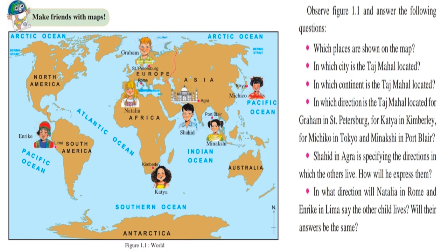The first question is which places are shown on the map? If you will observe carefully, you can see a red dot and beside it names of places are given. The places shown in the map are St. Petersburg, Agra, Port Blair, Tokyo, Kimberley, Rome, Lima.